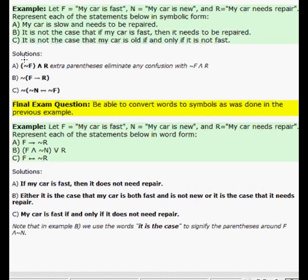If my car is slow that means it is not fast. So that would be the negation of F. And since the word in between the two statements is AND, we use the upside down V. So negation of F and R represents my car needs repair.